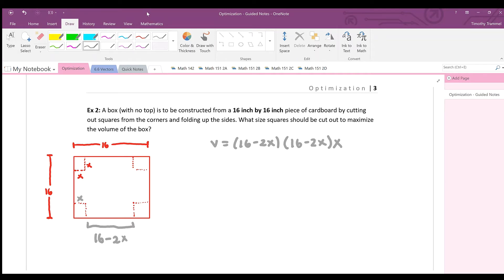So let's go ahead and rewrite v a little bit here. If we were to expand this out, before differentiating, of course, if we were to expand this out, we'd get 256 minus, and I don't want to forget my x here, 256x minus 64x squared plus 4x cubed.